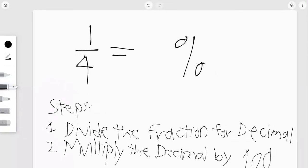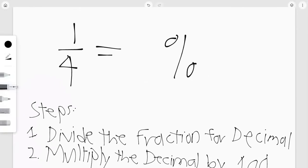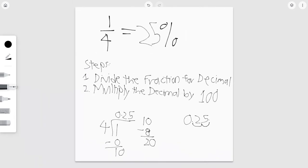Alright, and our final answer would be 25. So 25 is the percentage amount for 1 fourth. So that is a simple way of converting a fraction to a percent.